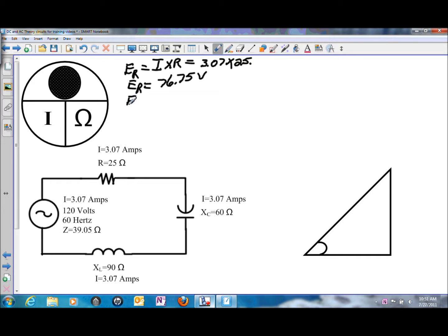Voltage drop on the capacitor, the same I times R, or 3.07 amps of current flow times 60 ohms of capacitive reactance. So the voltage drop on the capacitor will be 184.2 volts.